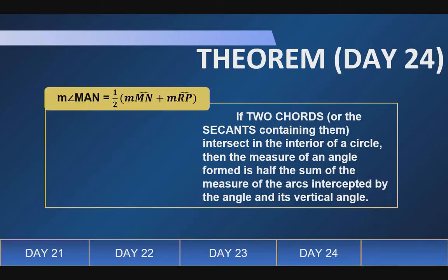So, itong theorem 24 natin, may pilat kaiba siya dun sa ating mga unang tatlo na theorem. So, if two chords or secants containing them intersect in the interior of the circle, katulad na ito, mayroon tayong dalawang sikat na nag-intersect or nagtamaan sa loob ng circle. Interior means loob. Then, the measure of an angle form is half the sum. Ito na. Sum. Ito yung pinakaiba niya. Of the measure of the arcs intercepted by the angle in its vertical angle.